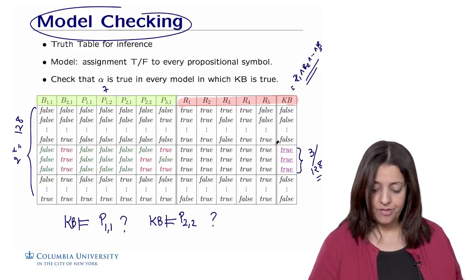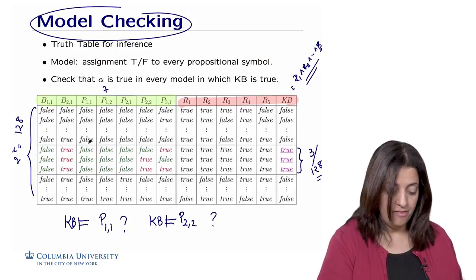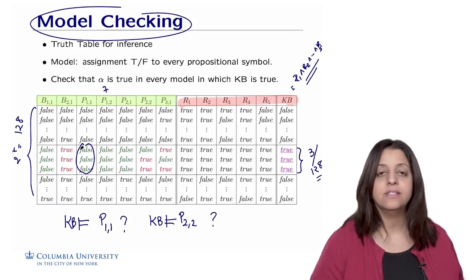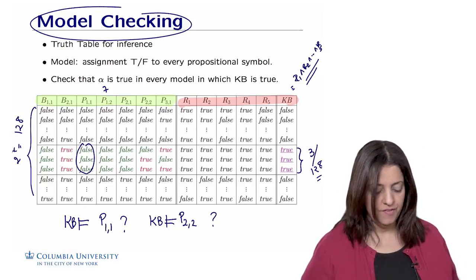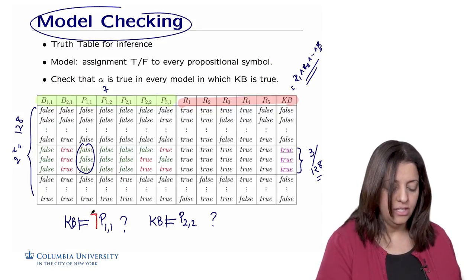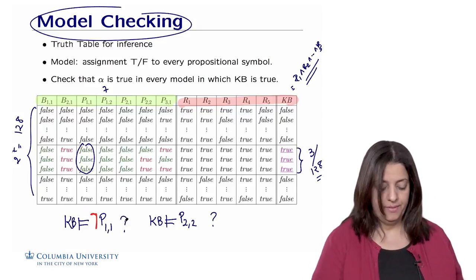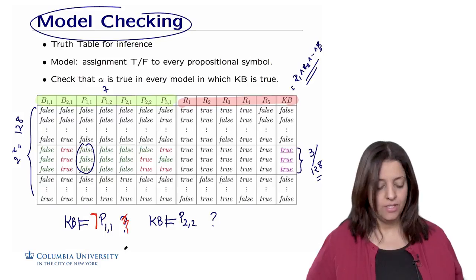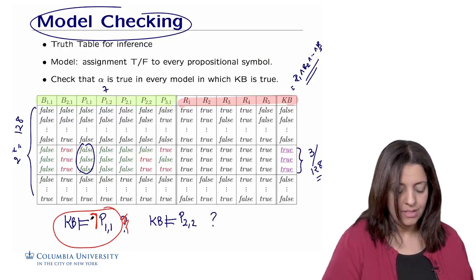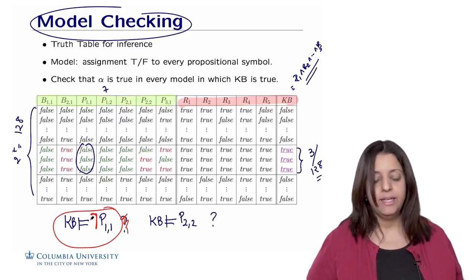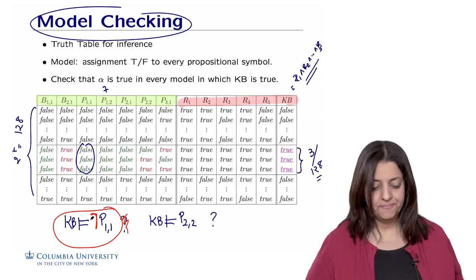We're going to check that whenever the knowledge base is true, we have p11 is actually false, in which case we could infer with confidence that KB entails the negation of p11. So this is not a question anymore. We know by model checking that KB entails the negation of p11.